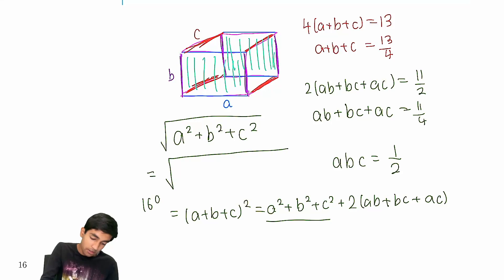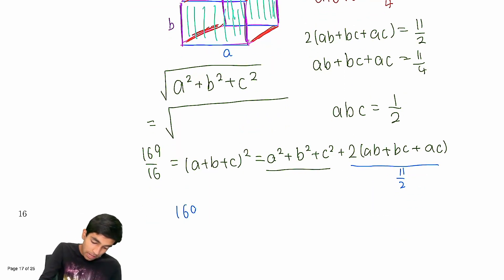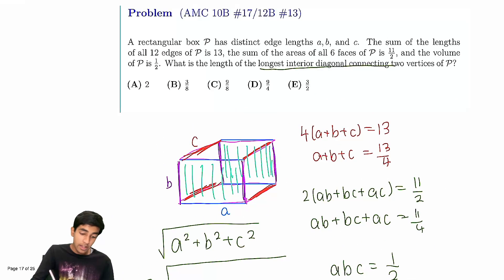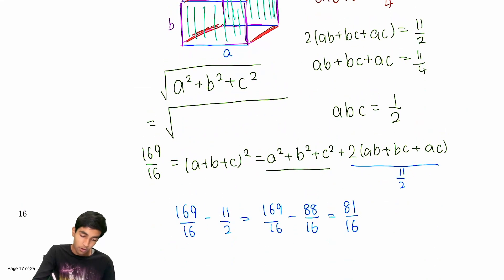which is 169/16, and then subtract 2(ab + bc + ac), which is 11/2. So it's 169/16 - 11/2, which is 169/16 - 88/16, which equals 81/16. So the square root of this is 9/4.